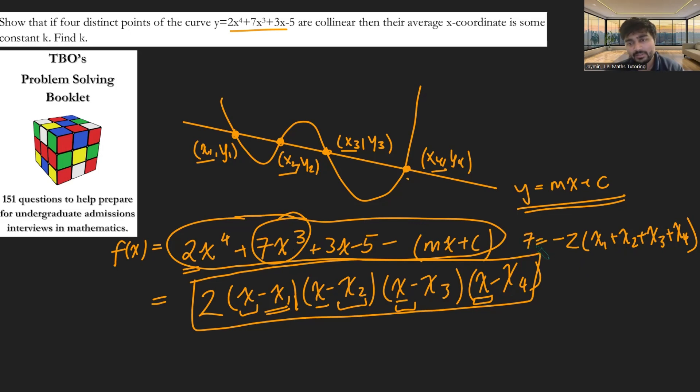If you look at the coefficient of x cubed on the left side, it's just 7. So we get 7 equals, just put this on the side here, minus 2 times x1 plus x2 plus x3 plus x4. And so, therefore, the sum of the roots, which is kind of what we want, well, we want the sum of the roots over 4 to take the average of them, is going to be minus 7 over 2 over 4, which is minus 7/8. And that there would be the average of the x coordinates, and so k would be minus 7/8.